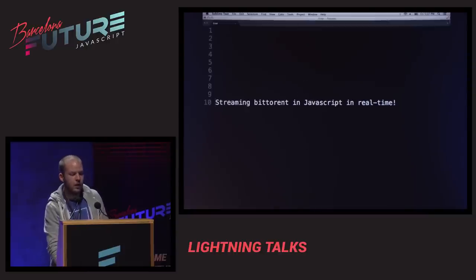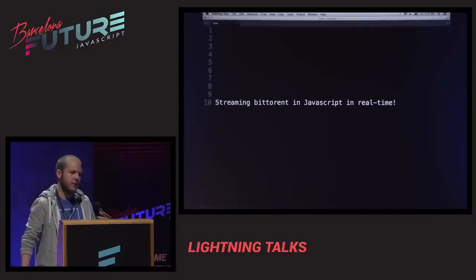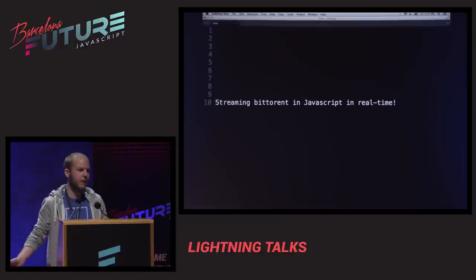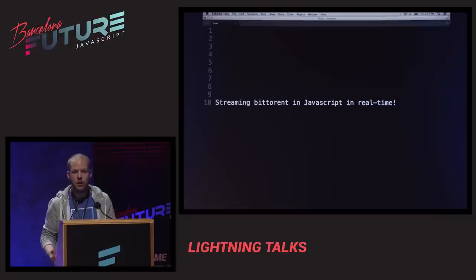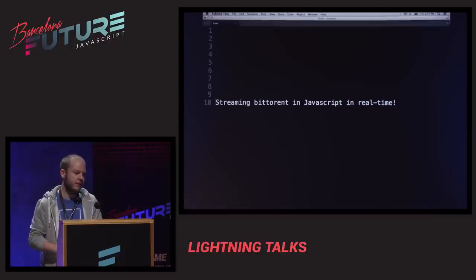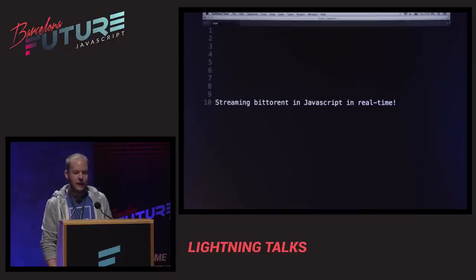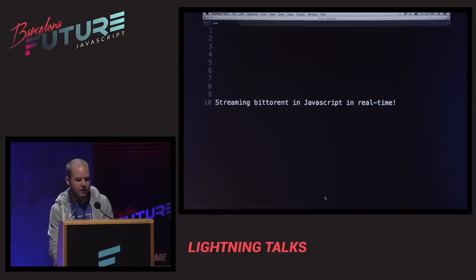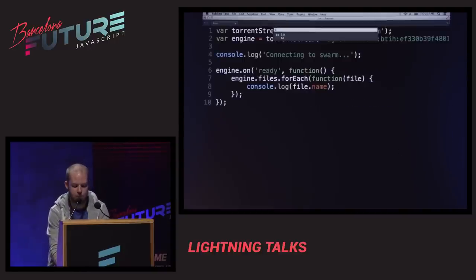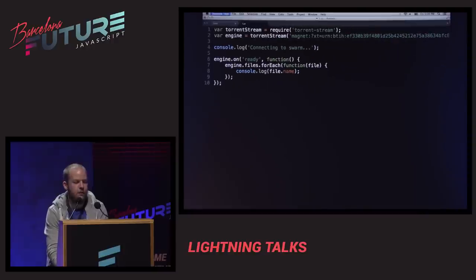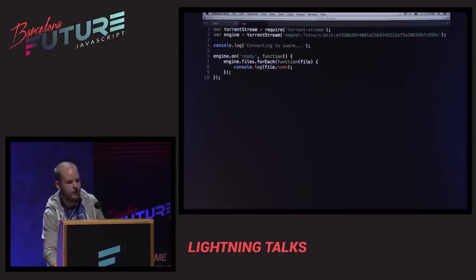What Torrent Stream basically does is it allows you to take a torrent and use it from Node in real time as a Node stream. So you can have a torrent that consists of 10 gigabytes of data and start streaming it immediately. I'm going to try to demo this today — please don't try to run this demo because we'll probably kill the network. I cheated a little bit and preloaded some of the data. This is just an example of how it works.